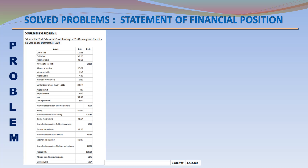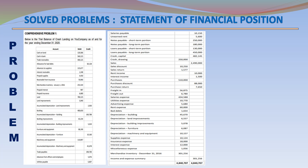Buildings (Debit) 480,650; various building-related debits including 40,560; 70,560; 20,012; 21,013. Accumulated depreciation credits 20,050. Machinery and Equipment 110,897 (Debit); Accumulated Depreciation — Machinery and Equipment 45,678 (Credit); Trade Payable 198,700 (Credit); Advances from Officers and Employees 50,76 (Credit); Utilities Payable 6,807 (Credit); Salaries Payable 10,150 (Credit).